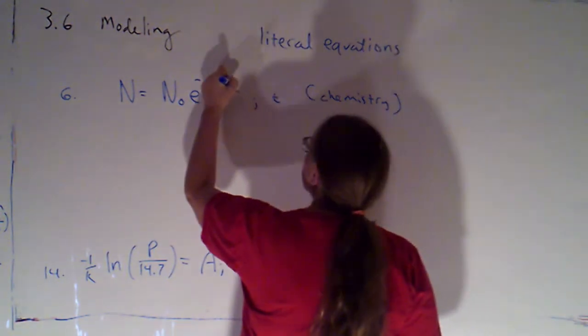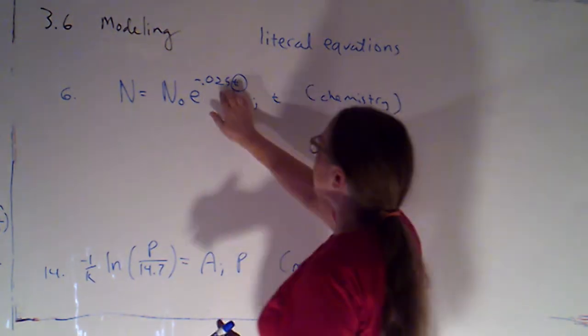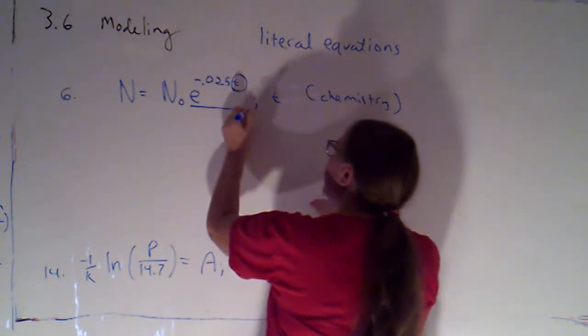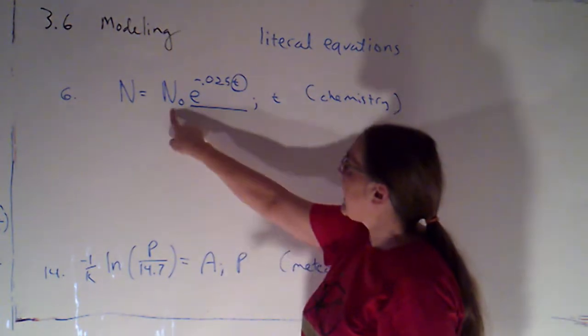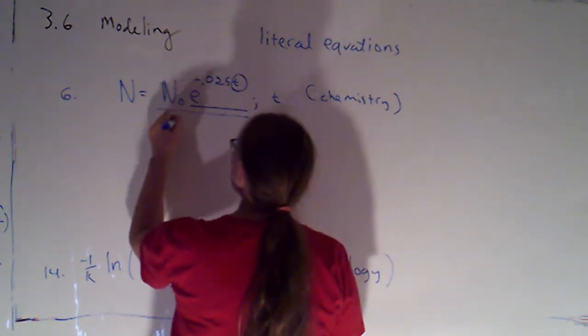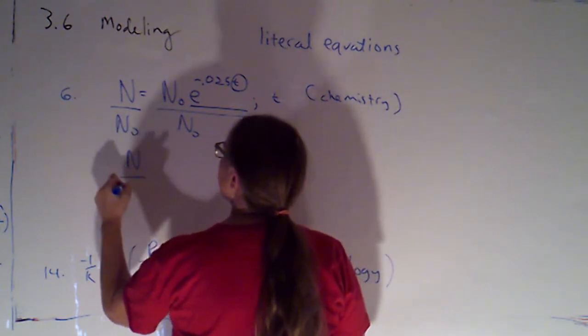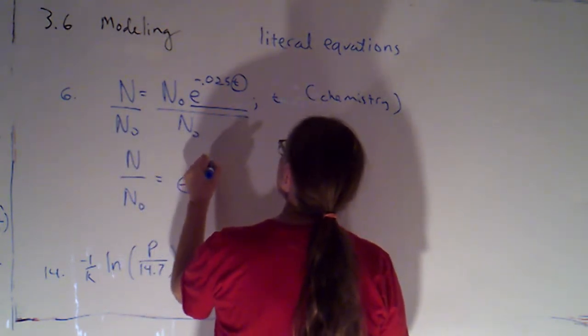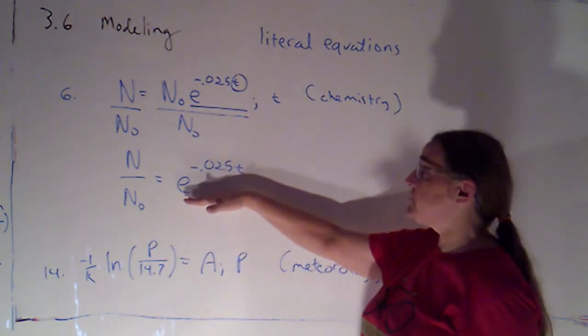I'm going to just circle the t. That's what I want to get by itself. So I can see that that's up there in that exponential, in that exponent position. So I know I want to isolate the exponential expression. So that n sub zero, that n naught, is not part of the exponential expression. So let's first of all just divide both sides by that. So I would have n divided by n naught is equal to e to the negative 0.025t.